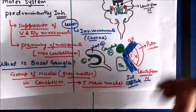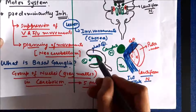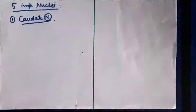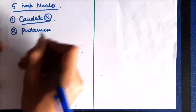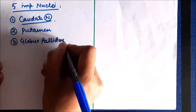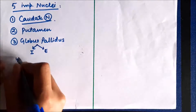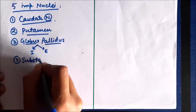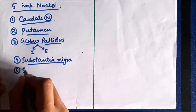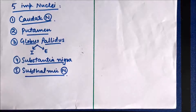There are five important nuclei in basal ganglia. The first is the caudate nucleus — a C-shaped nucleus. The second is the putamen, which is part of the lentiform nucleus. The third is the globus pallidus, also part of the lentiform nucleus, consisting of globus pallidus internus and globus pallidus externus. Two more nuclei not visible in coronal or sagittal sections are: the substantia nigra, mainly present in the midbrain, and the subthalamic nucleus, present in relation to the thalamus.